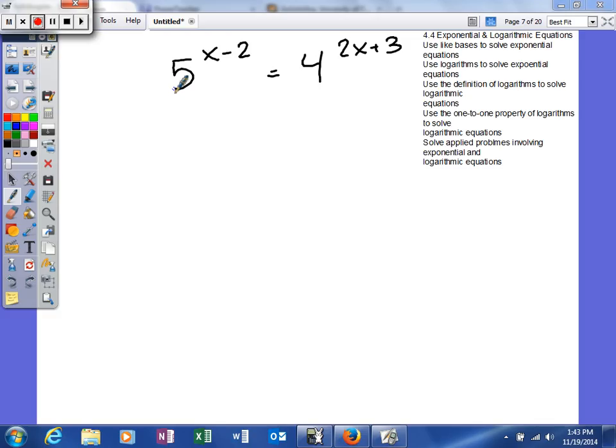The last problem we did with this was we were able to write this as a base of 2 to some power will give us 5, and then 2 to some power will give us 4. Well, neither of those would allow us to write both of these as a common base with a rational exponent. So we have to basically explore another option.